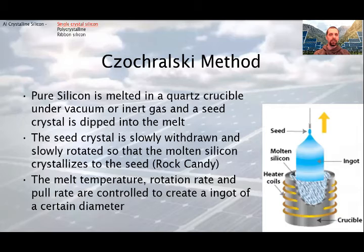Let's see first the CZ growth method. The pure silicon is melted in a quartz crucible under vacuum or inert gas and the seed crystal is dipped into the melt. The seed crystal is slowly drawn and slowly rotated. So the molten silicon crystallizes to the seed crystal surface. The melt temperature, rotation rate and the pull rate are controlled to create an ingot of a certain diameter. Over a period of many hours, the seed crystal grows into a large cylindrical crystal up to 40 inches in length and 8 inches in diameter. Because the ingot is round, the edges are often cropped to a more rectangular or square shape, which allows cells to be packed more closely in a module, but we will see a bit later.